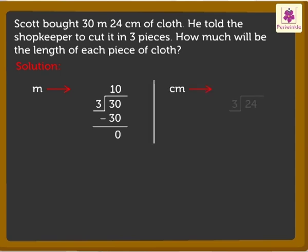Now, divide 24 centimeters. How many times 3 is 24? 8 times 3 is equal to 24. Therefore, we will write 8 as the quotient. Further, write 24 below the dividend and subtract. The final remainder we get is 0.